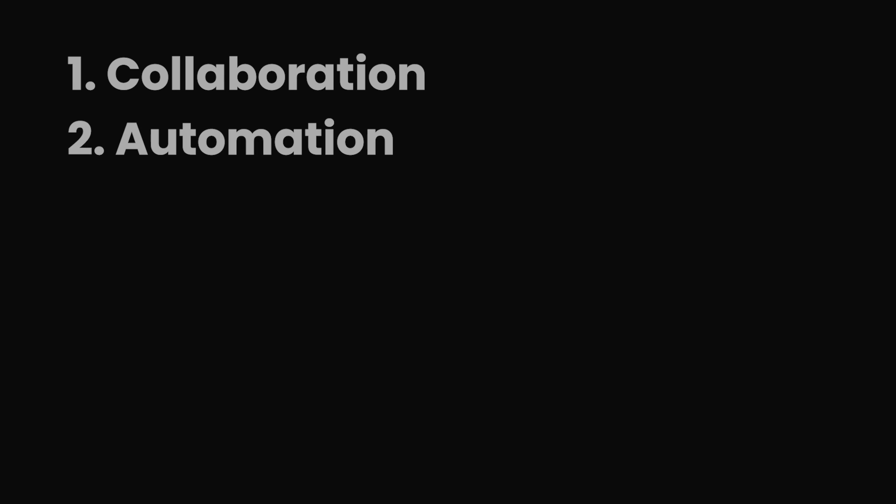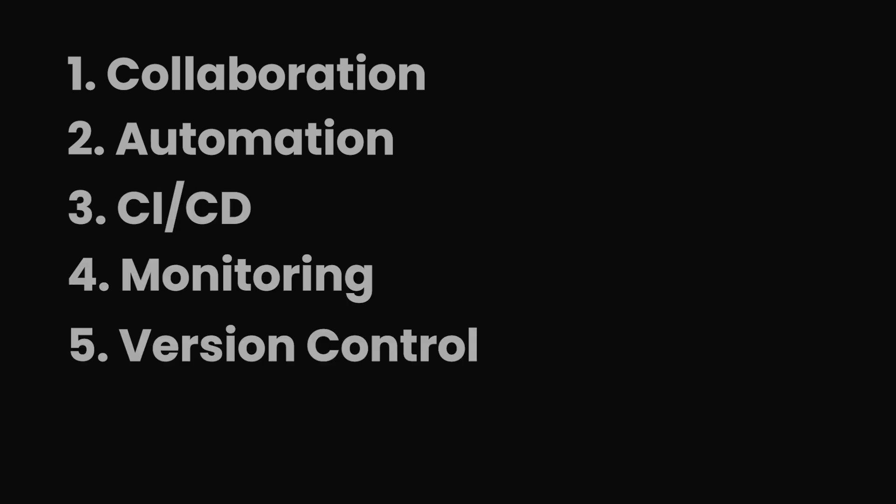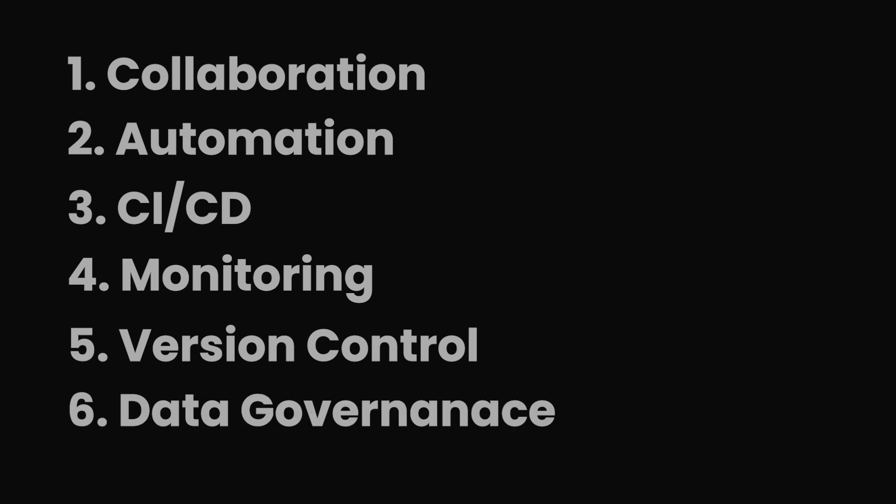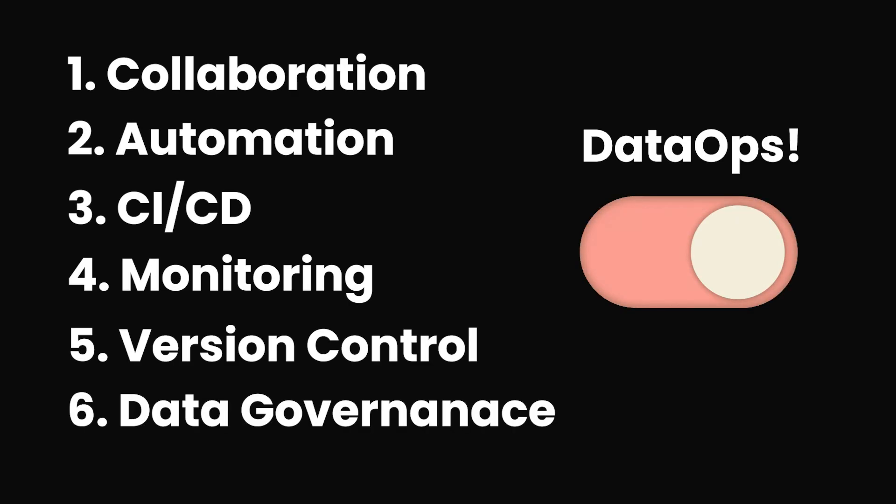It really emphasizes the need for optimization and development of data pipelines with a very high level of data quality and data governance. We can break all that down into these six key building blocks: collaboration, automation, CI/CD, monitoring, version control, and data governance.